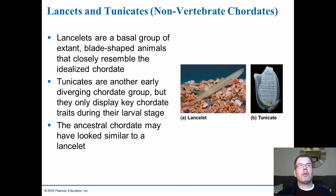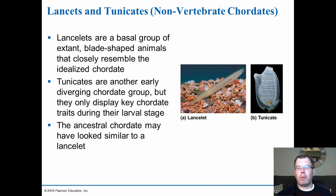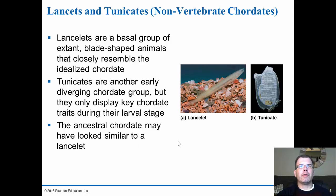The first group are the lancets and tunicates. Tunicates look like a big heart-like sessile structure attached to a rock, but their larvae look more like the lancet — which is why they're included in this category, even though as adults they become sessile and look more like sponges. The lancet is the basic chordate we think of from the developing embryo, but it never shows the vertebrate structure. These two non-vertebrate chordates don't have any backbone and keep the notochord. The ancestral chordate may have looked similar to the lancet.